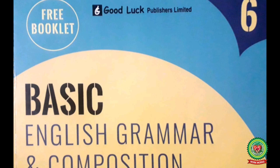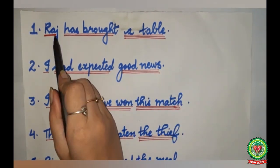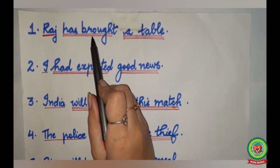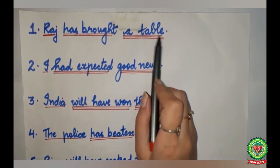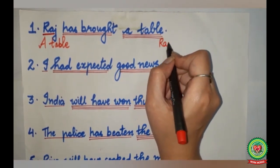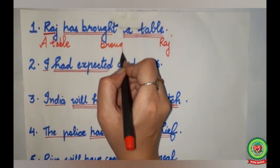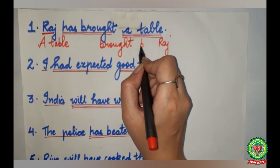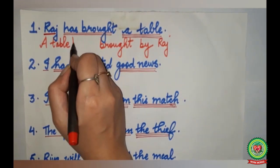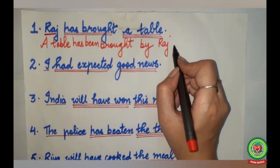Now we will discuss more examples. First: Raj has brought a table. Raj is the subject, has brought is the verb, a table is the object. A table will come in the beginning, Raj will go to the last. Brought will remain brought. Before Raj we add by. Has changes to has been. The sentence becomes: A table has been brought by Raj.